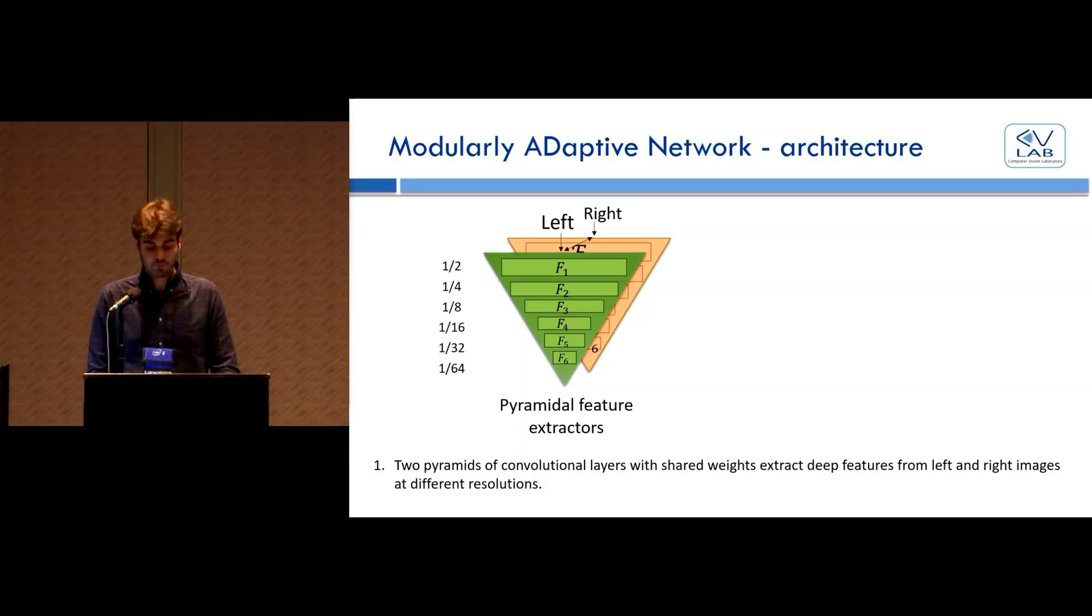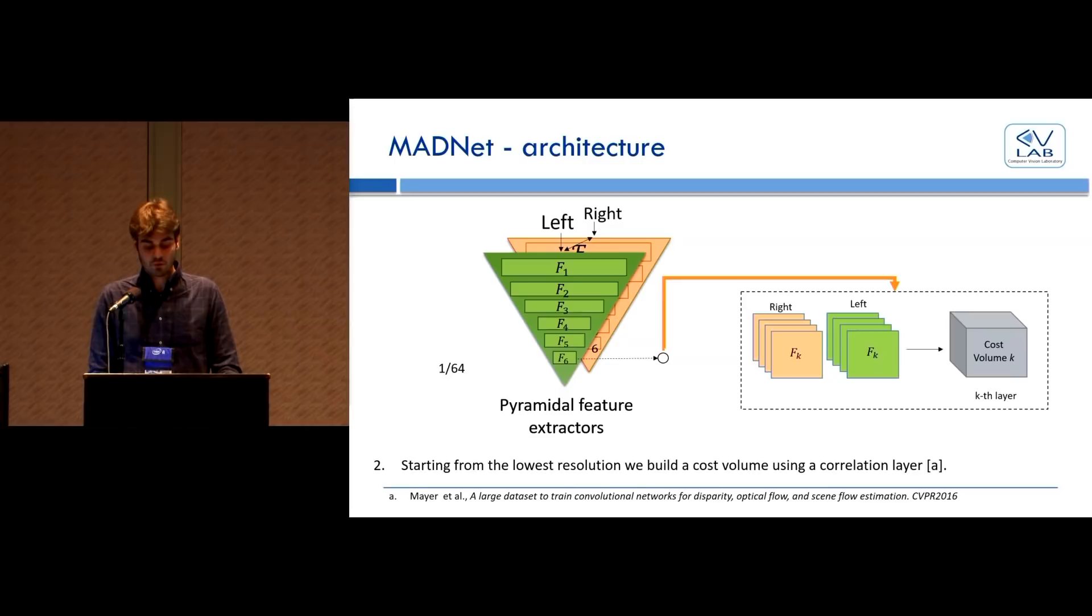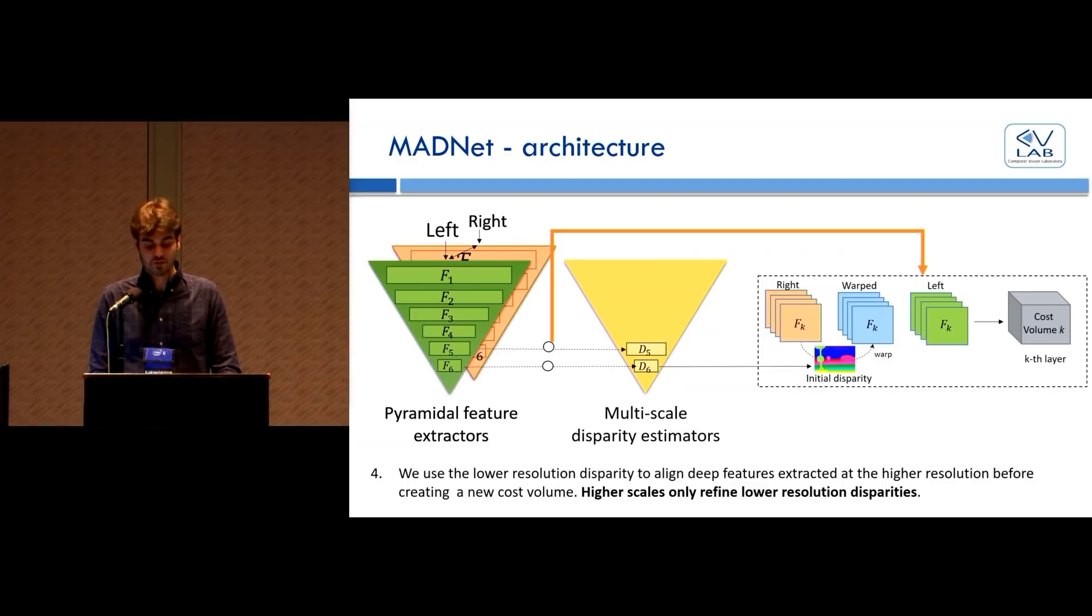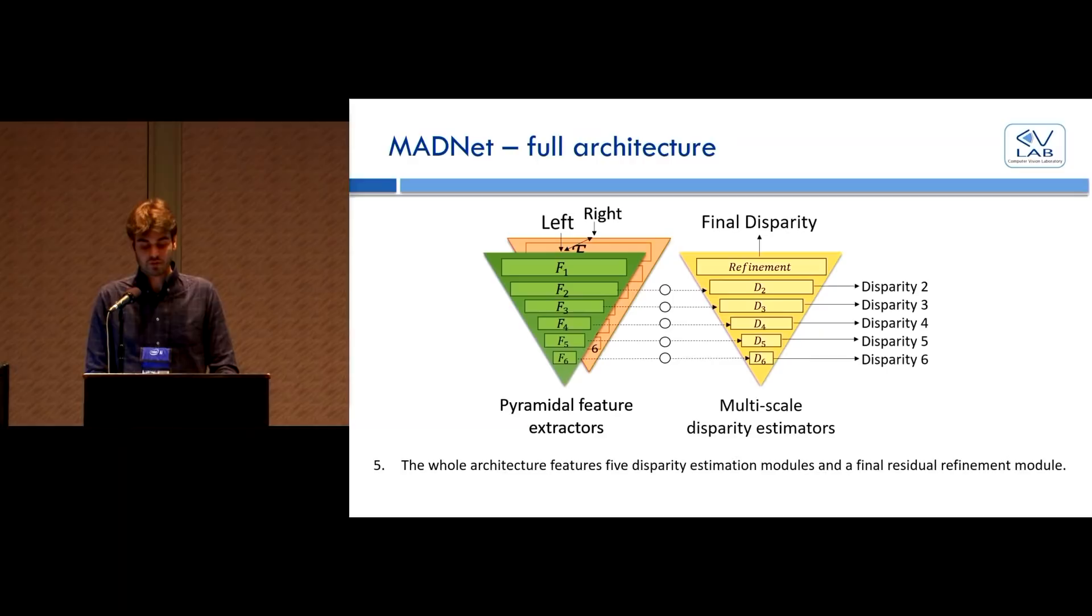I'll now start by briefly describing our new architecture. Starting from the left and right frame of a stereo couple, we extract features at multiple scales using a pyramid of strided convolutional layers. From the features of the lowest resolution, we build a cost volume using a correlation layer and feed it to a disparity estimation module to get an initial low resolution prediction. This initial prediction is used at the higher resolution to align the right features to the left one before computing another cost volume. Therefore, a higher resolution estimator needs only to predict a refinement of the lower resolution initial disparity. This process is repeated until quarter resolution, and then the final disparity is obtained after a residual refinement module based on dilated convolutions. The final architecture is modular and fast, doing most of the computation at the lower resolution while being remarkably accurate.